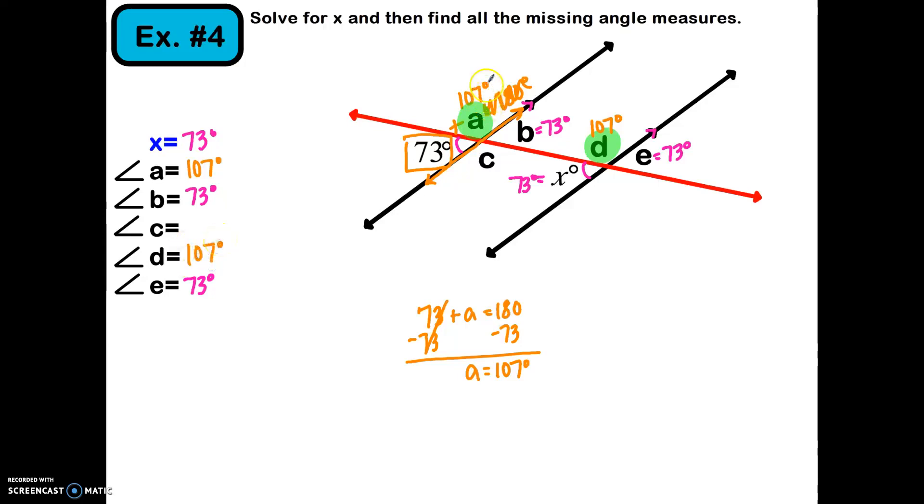I know that a and c are vertical angles, and vertical angles are congruent because they're opposite, so that is also 107 degrees. And we are done. Once again, we're starting to realize that we have a lot of the same repeating angles because that's what happens when we have parallel lines cut by a transversal.